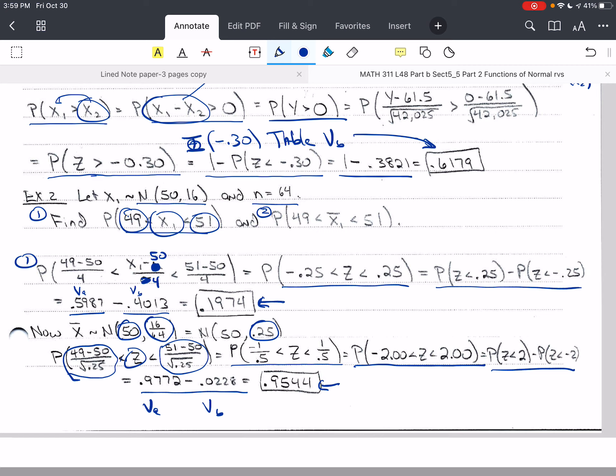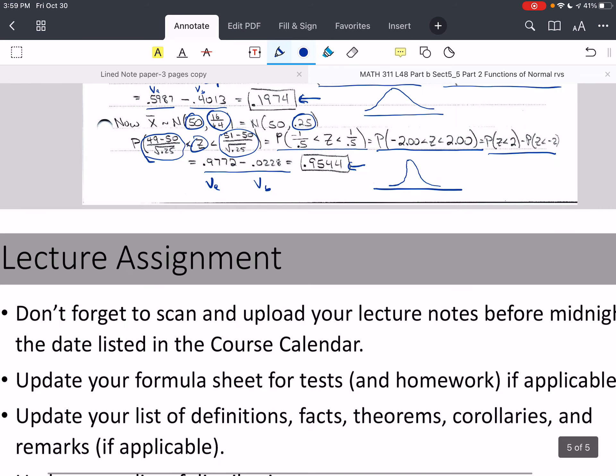And so here we would have something spread out like this. And here we would have a distribution that's very narrow. Good. All right. So that's it for this video.